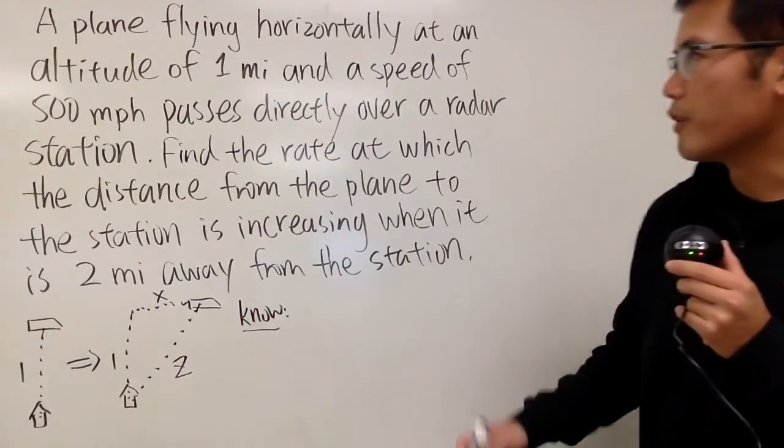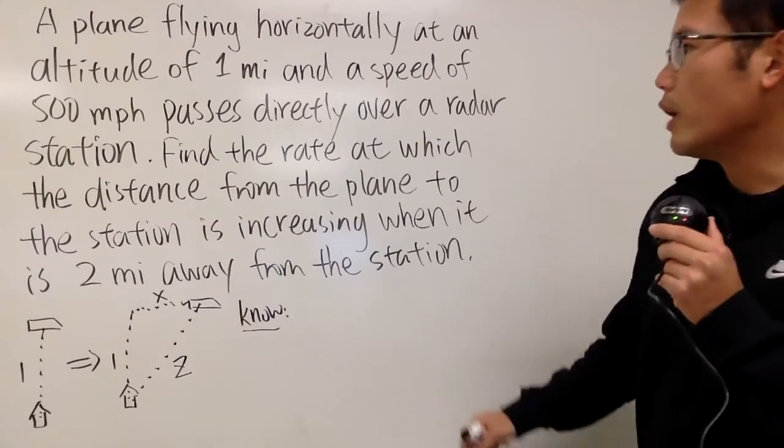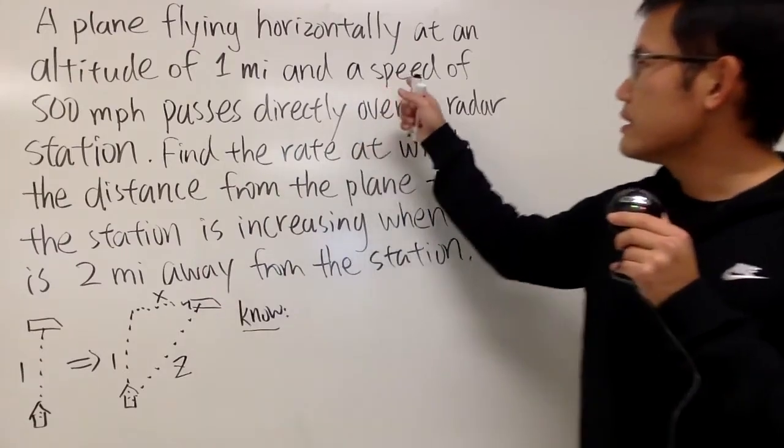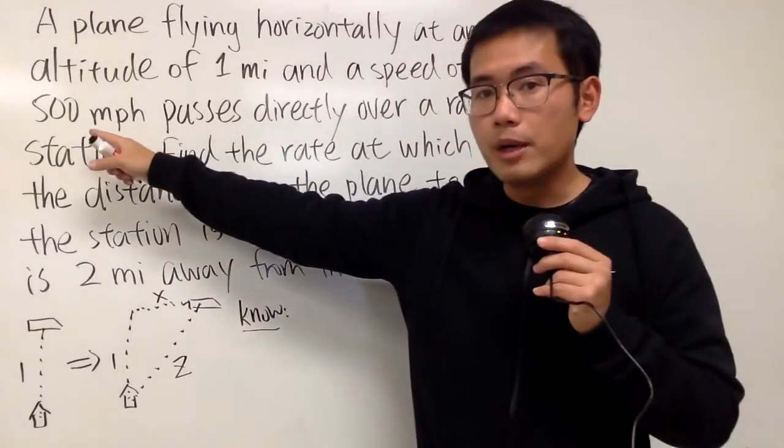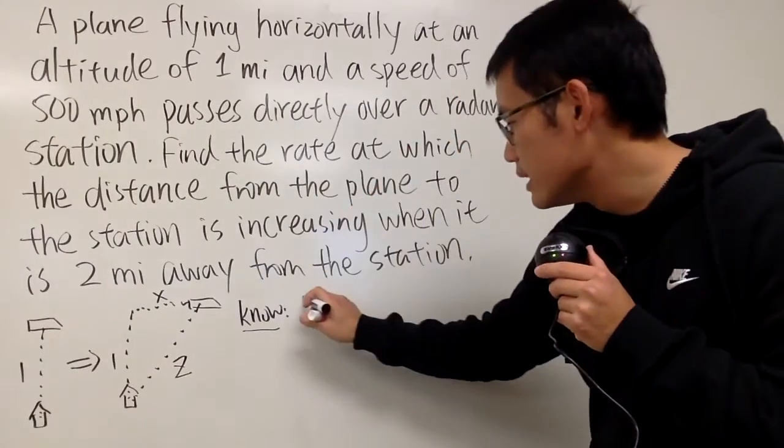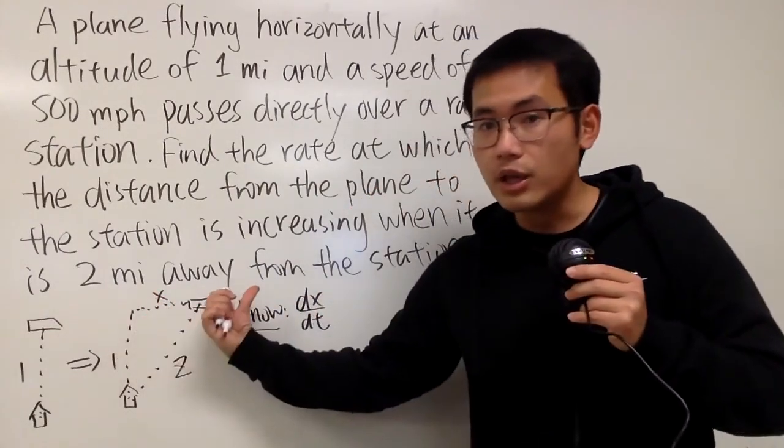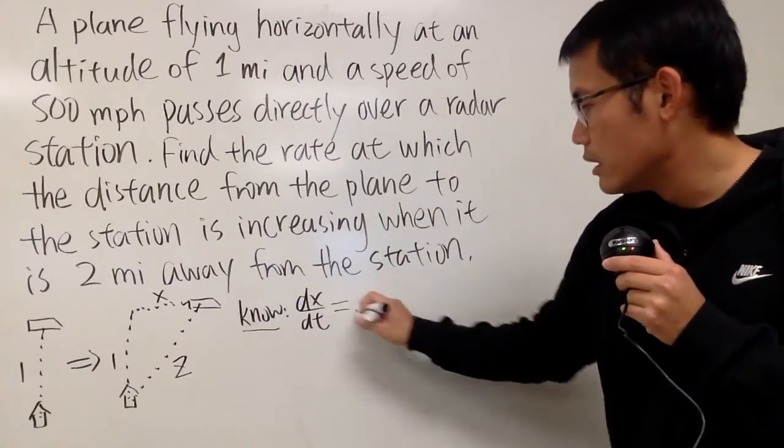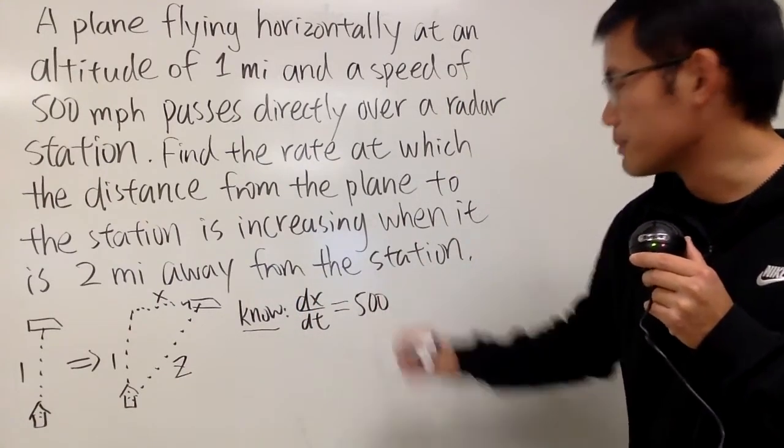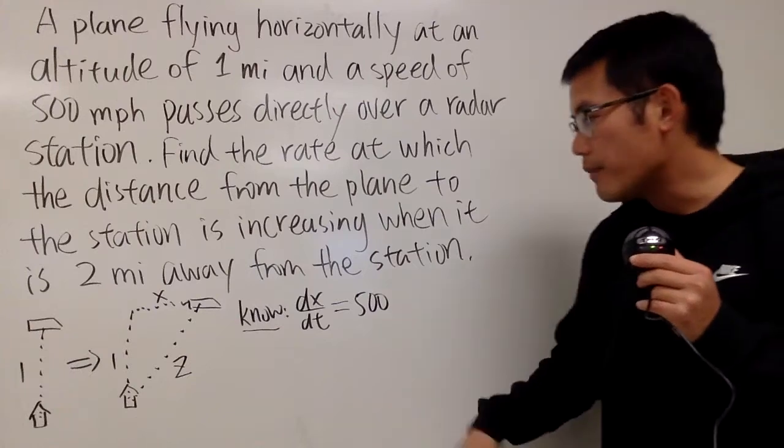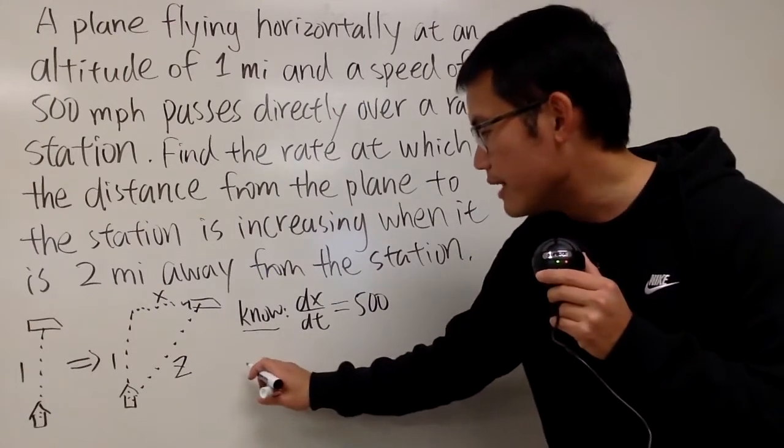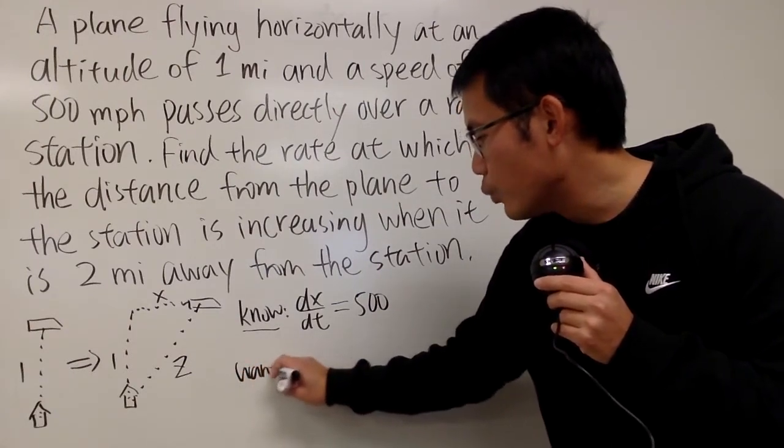Now, with this being done, let's go ahead and put down our information. What we know? Well, based on this, it says the speed of the airplane is 500 miles per hour, so we know that dx/dt, because that's how fast the plane is flying, this right here will be 500 miles per hour. You can just write down the number for now. Later on, just put down the units at the end.